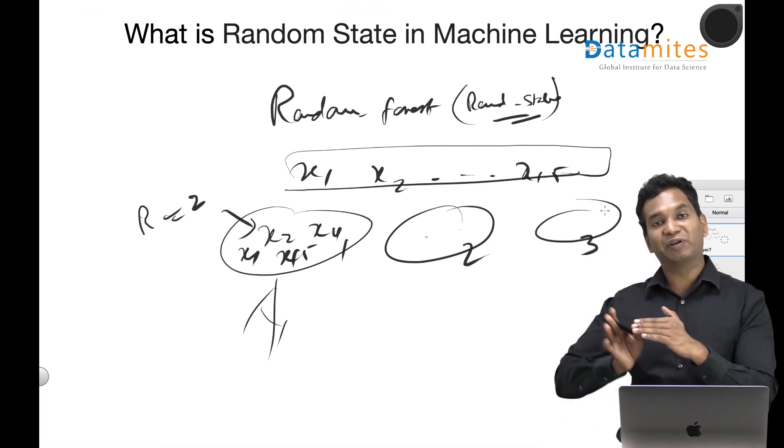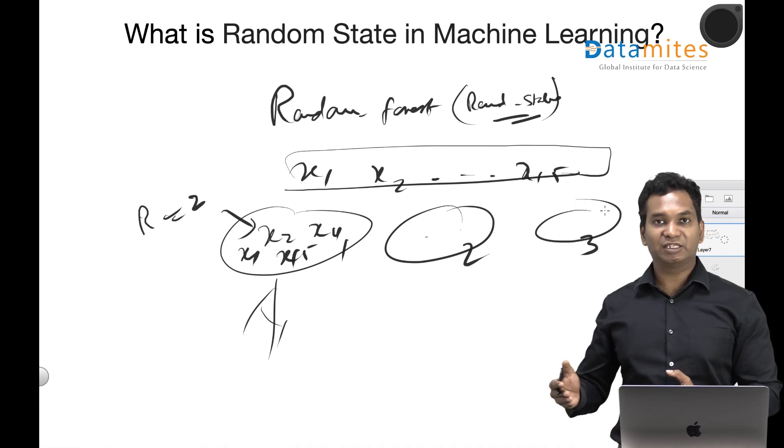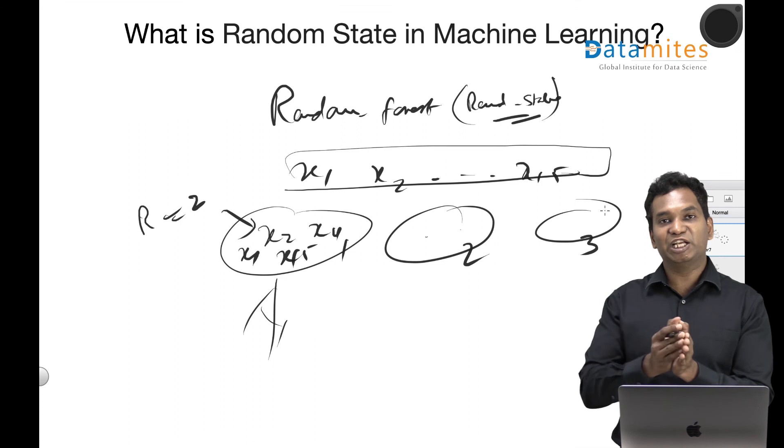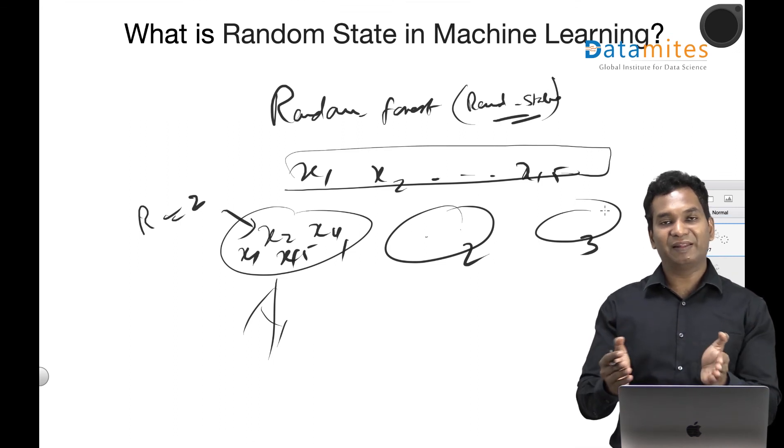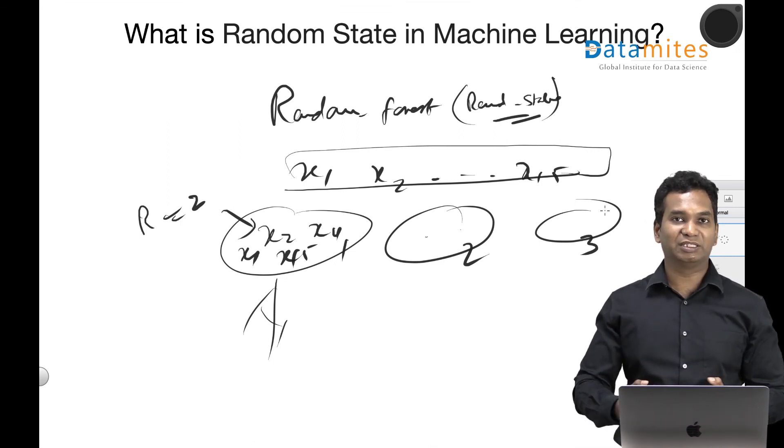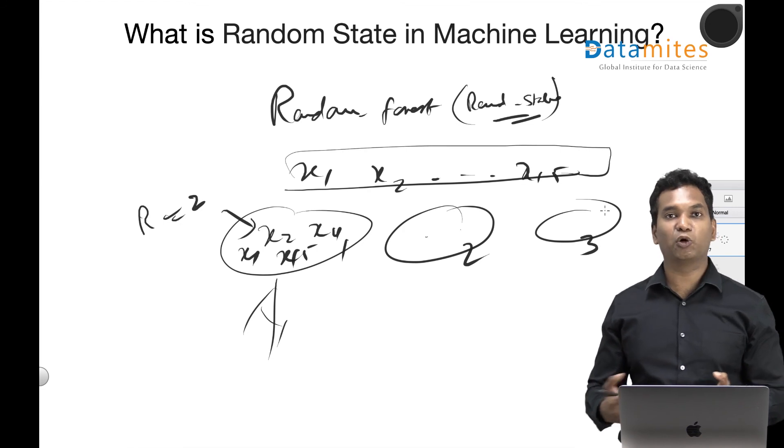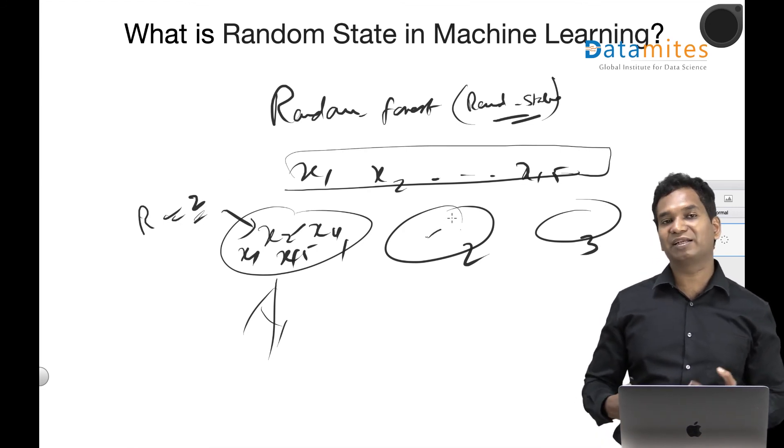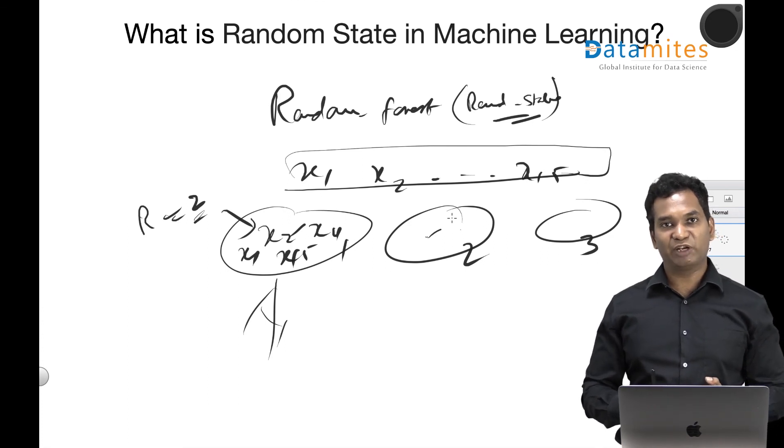When you say random_state, if the random state is equal to 2 or 0, there will be certain features being picked up for this estimator and that estimator. When you fix the random state in Random Forest, the features in individual estimators will remain the same. You can actually control—if you change the random state, the features here will change, and thereby you might land up getting slightly higher accuracy when you fine-tune the random state.